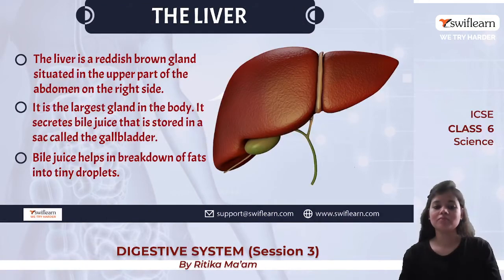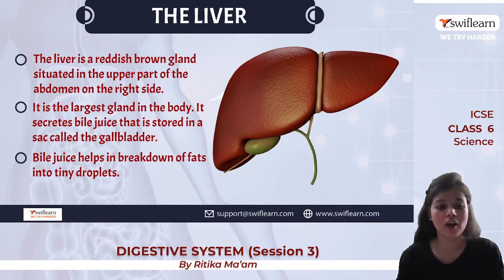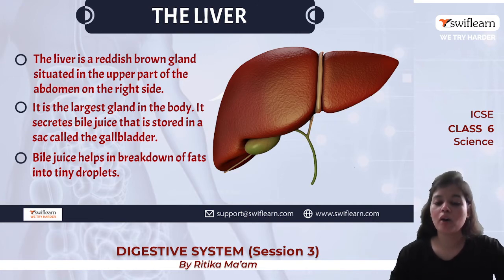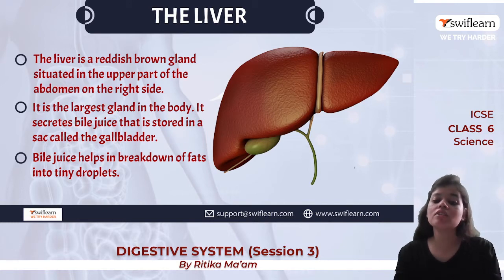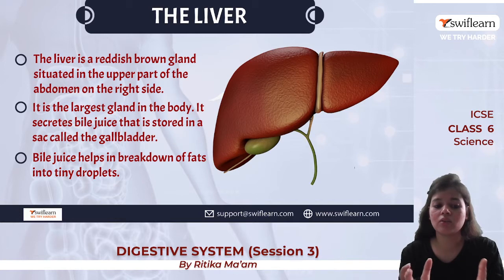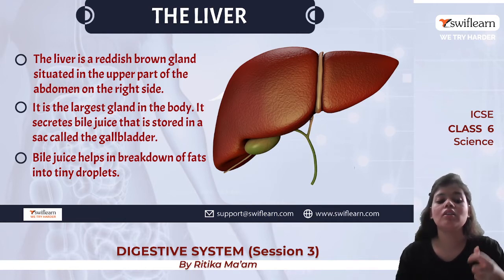The liver is the largest gland in the body, reddish-brown in color, and situated in the top-right part of the abdomen. The liver secretes bile juice, which is stored in a sac-like structure called the gallbladder.